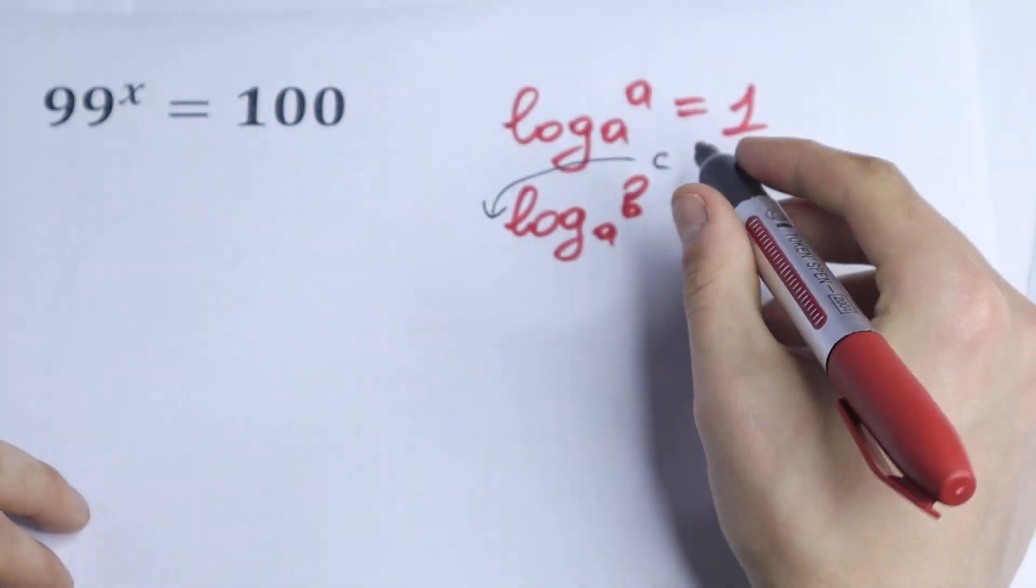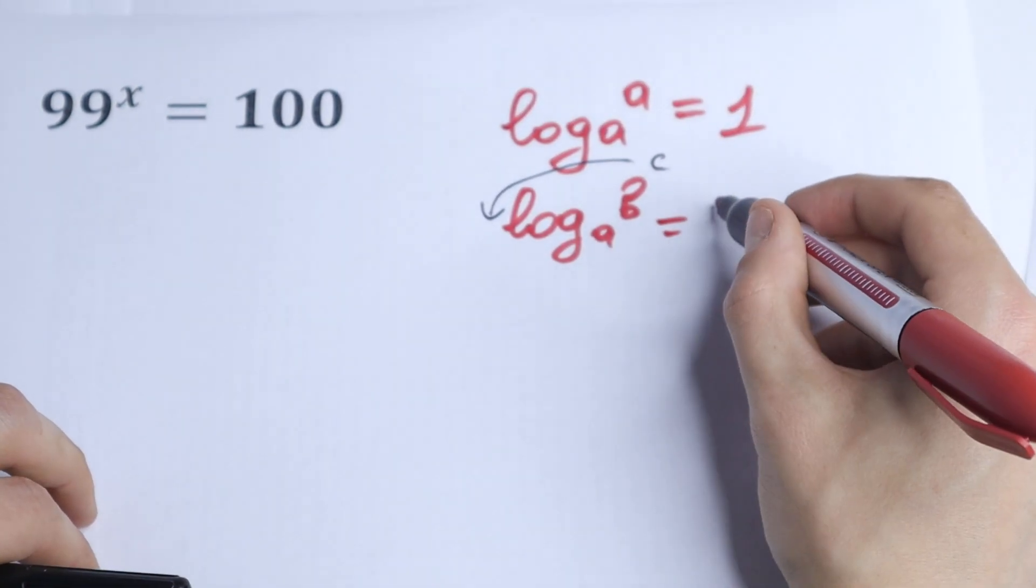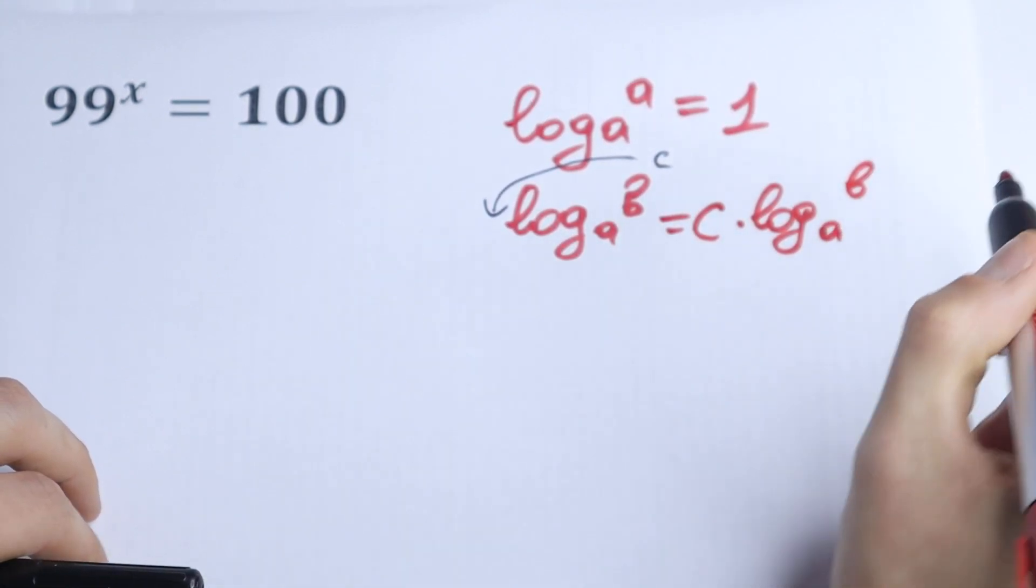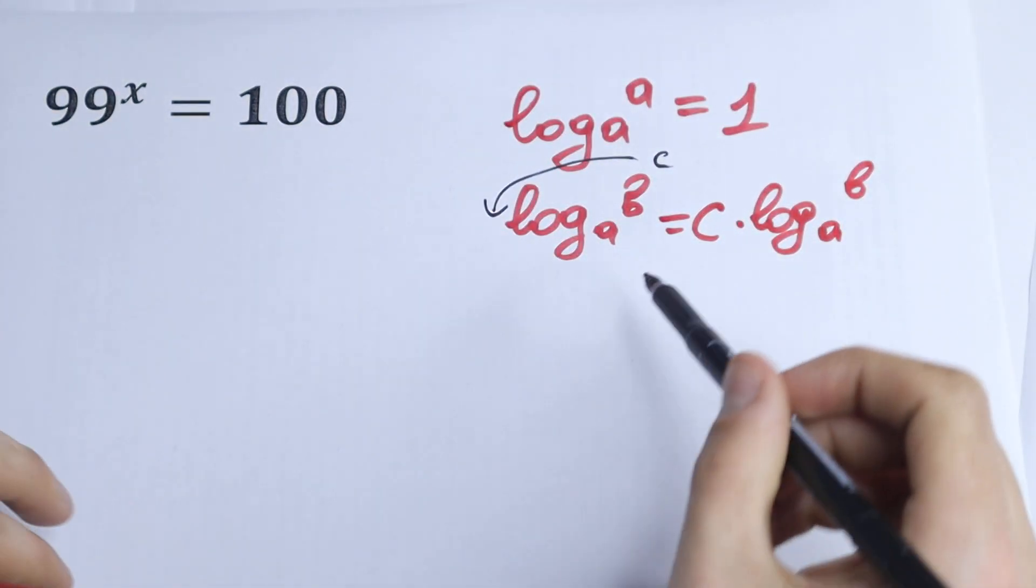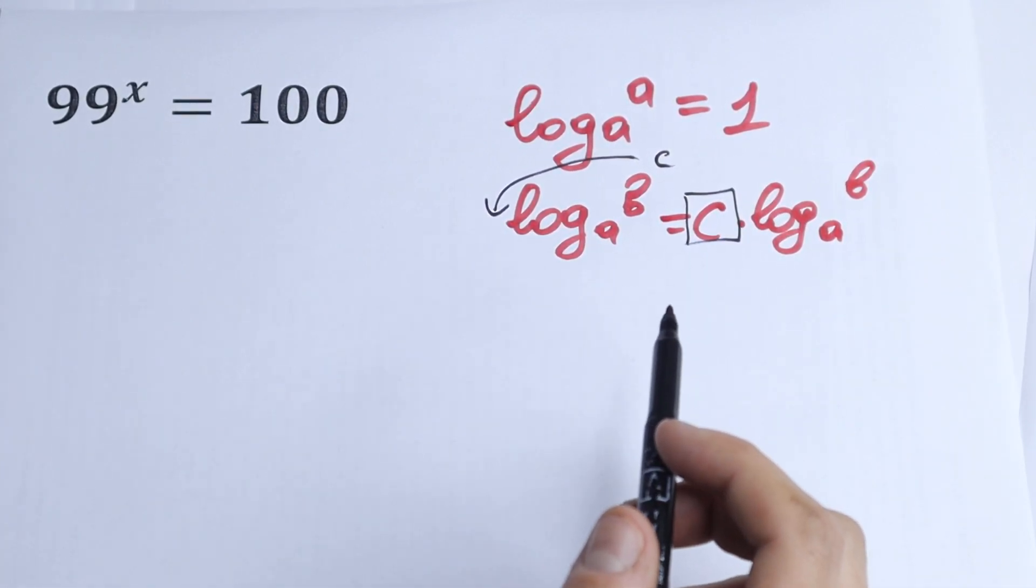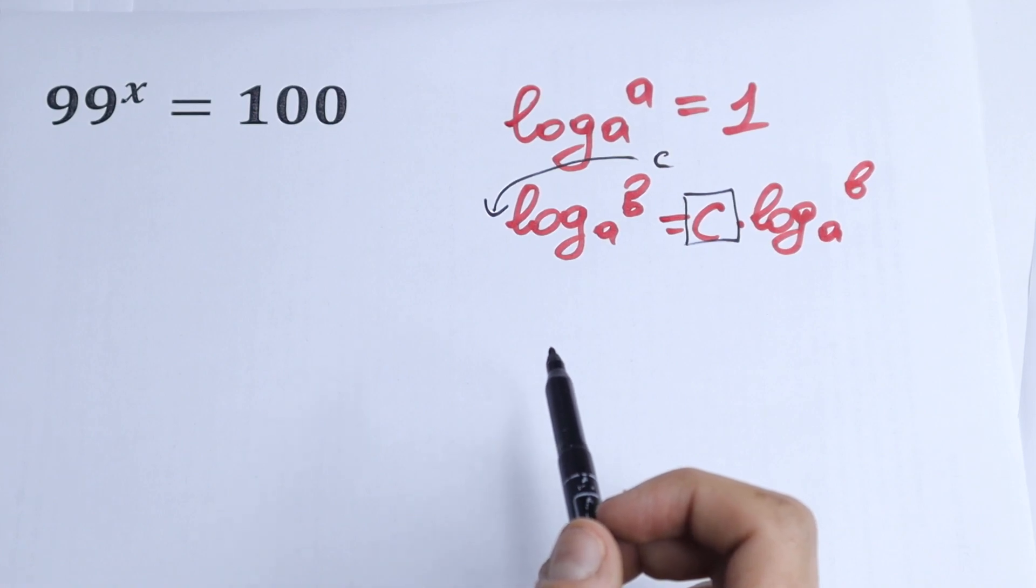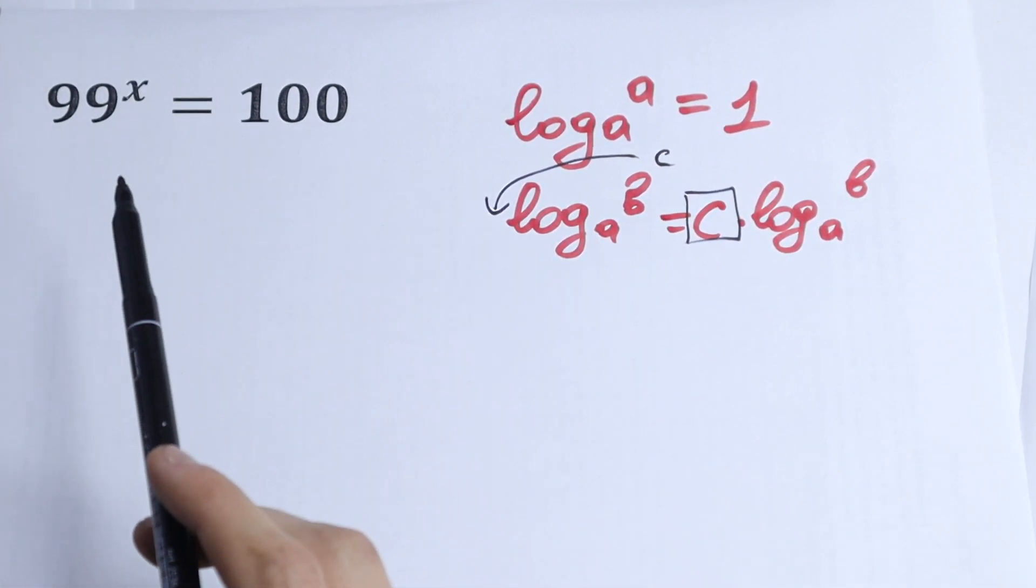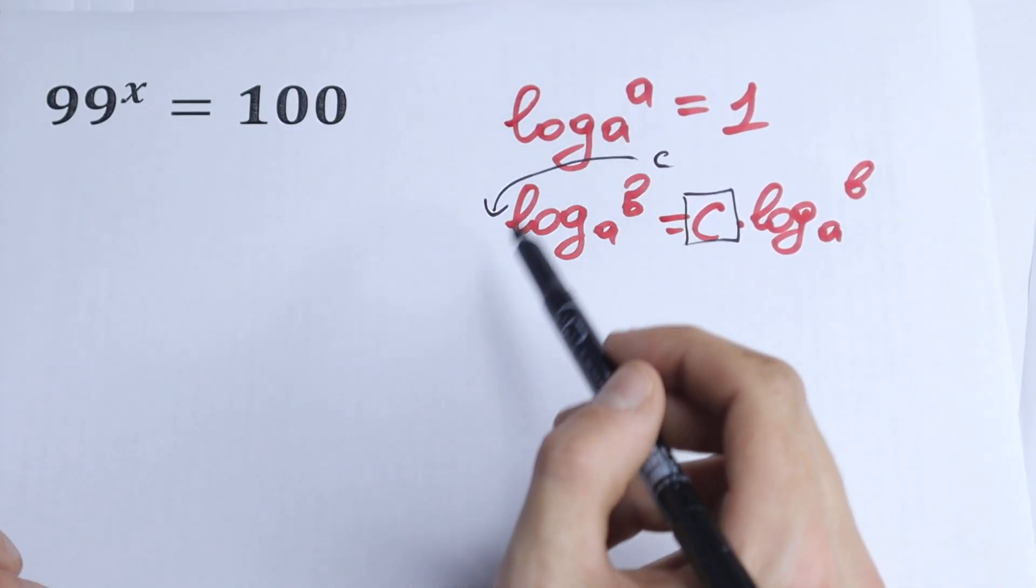this c jumps right here. So we can write it as c times log base a of b. Nothing hard, just this c jumps right here and this is a really good rule. So let's use this rule right here. So we just need our x, we don't need our x in the exponent, so let's use this rule.